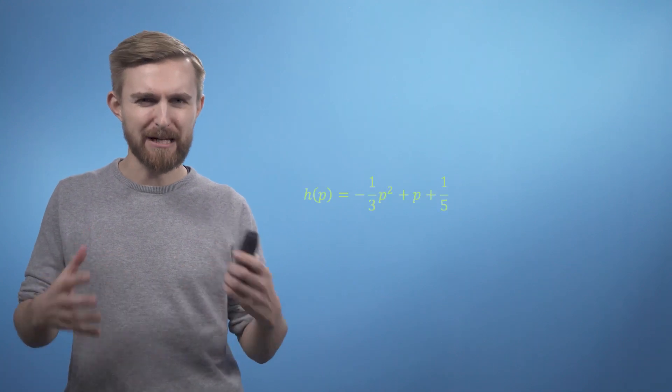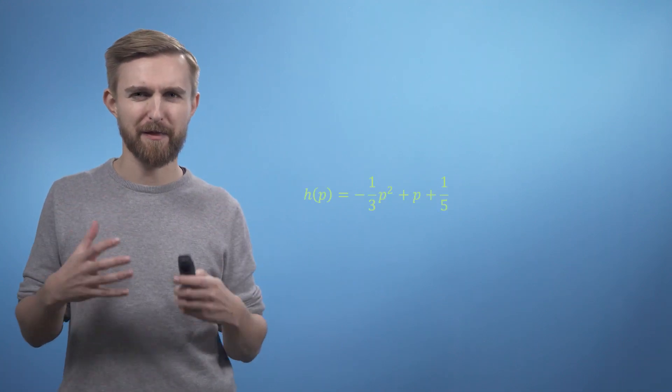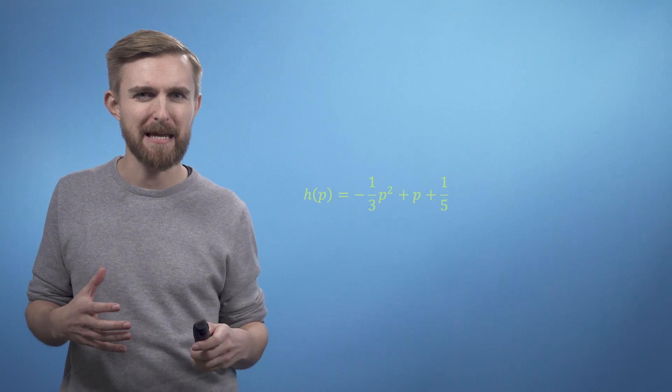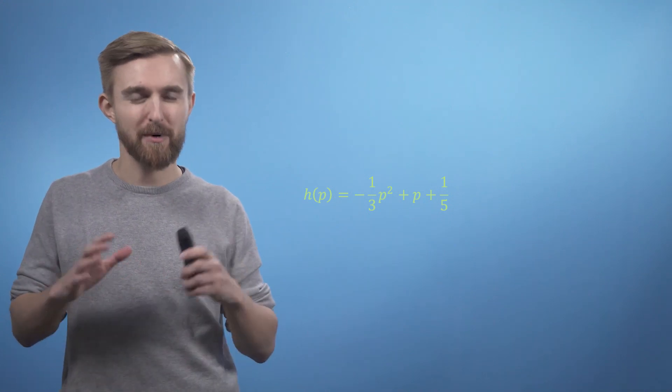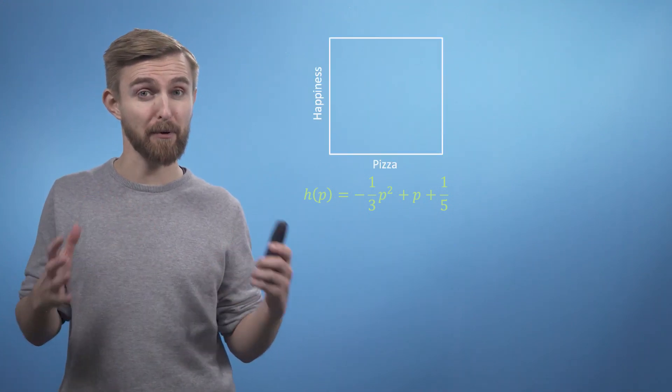So, first I'm going to give you the function relating happiness and pizza, which has the following polynomial form. h of p equals minus a third p squared plus p plus one over five, which is easily understandable from a plot.